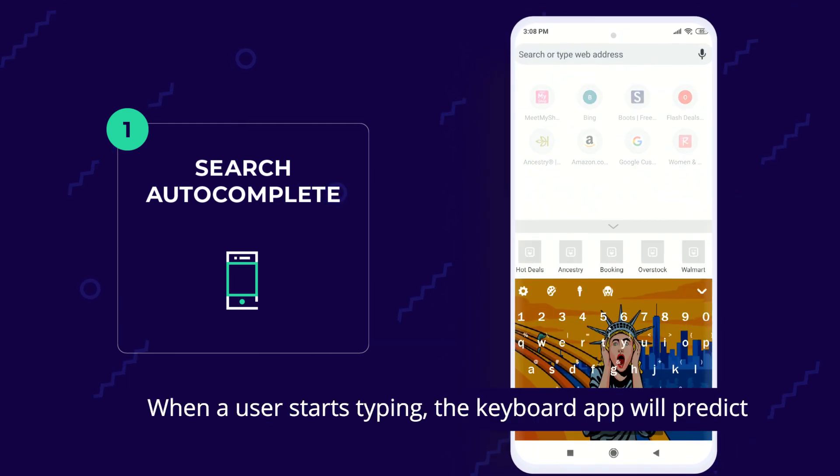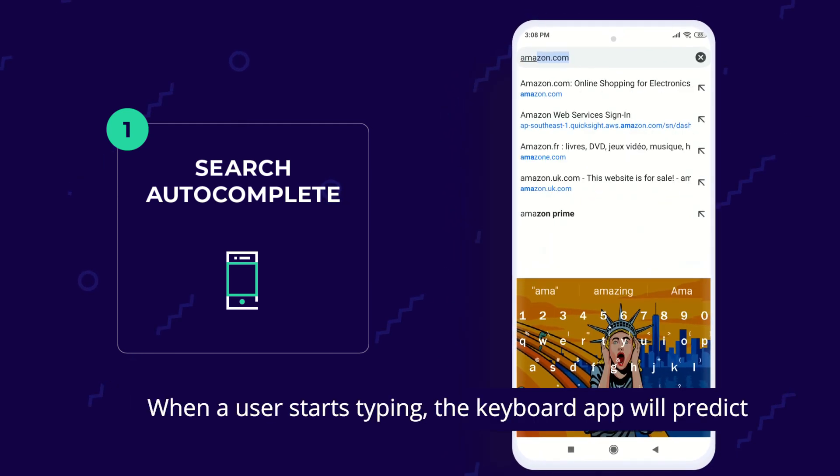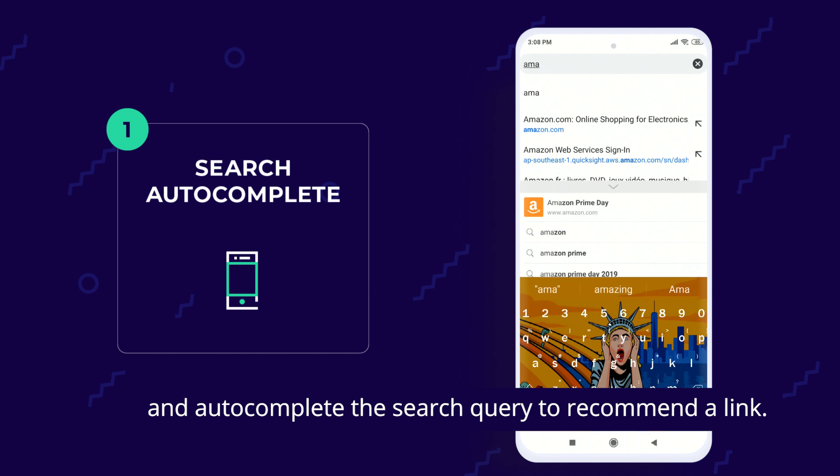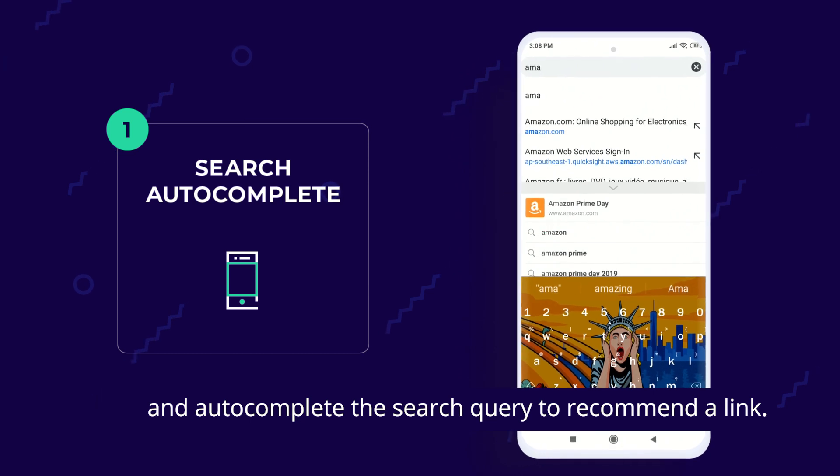When a user starts typing, the keyboard app will predict and autocomplete the search query to recommend a link.